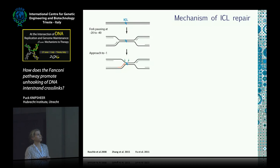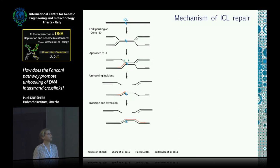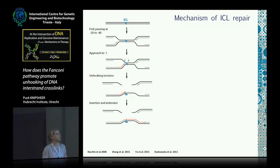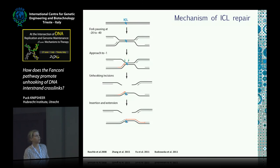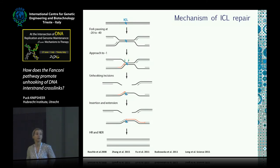Then one of the replication forks approaches the ICL to within one nucleotide, and dual incisions on the parental strand unhook the ICL, allowing a lesion bypass reaction that occurs in various steps. First, a nucleotide is inserted across from the unhooked adduct by an unknown translesion polymerase, and then Rev7 in combination with Rev1 does the extension of this strand. The final steps involve homologous recombination and possibly nucleotide excision repair to remove the adduct.